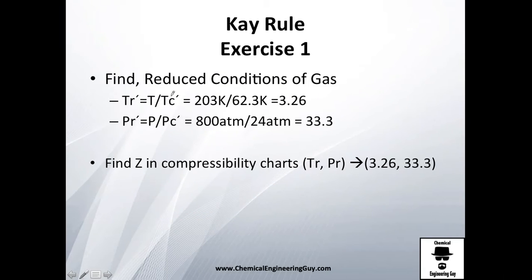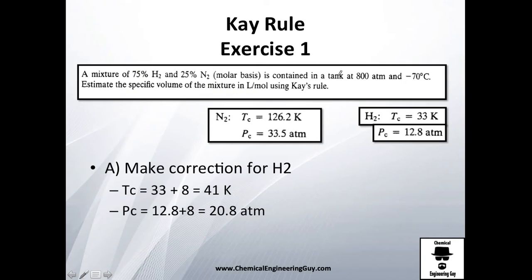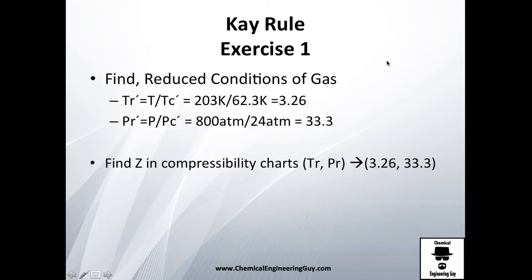Once we got the critical temperatures, we're not done yet. If you were to report that, you'd be incorrect. Let's calculate the reduced temperature: Tr = 203 Kelvin divided by 62.3 Kelvin equals 3.26. And the reduced pressure: Pr = 800 atmospheres divided by 24 atmospheres equals 33.3.